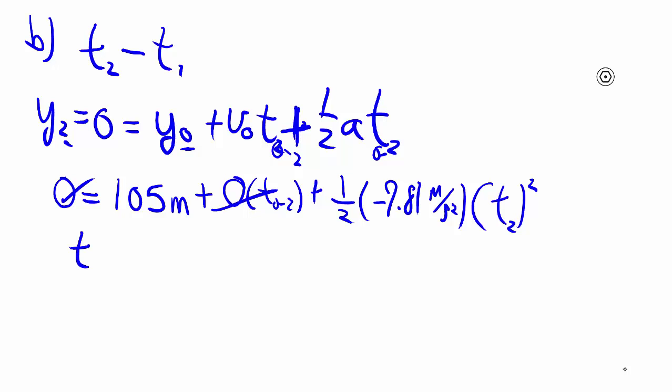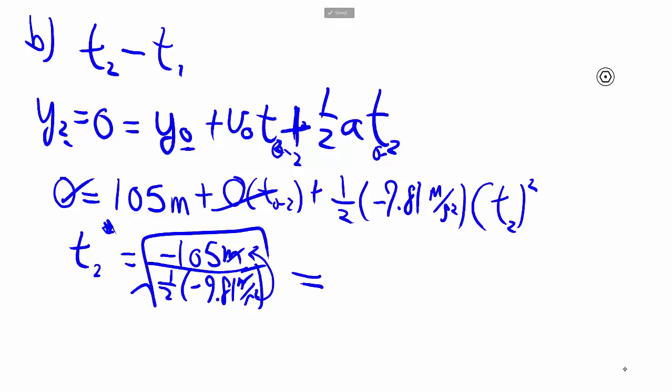Rearranging, we get that t2 square is equal to negative 105 divided by one half negative 9.81 meters per second squared. This is of course meters. Again, cancels out, second square goes on top. But we don't want the square, we want the square root. Technically it's plus or minus, but we know we're only interested in the positive root.